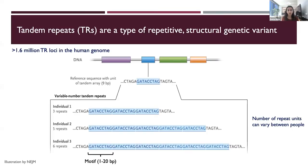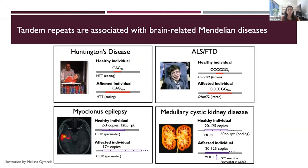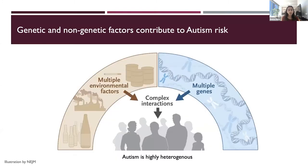Tandem repeats are DNA sequences that are repeated consecutively, and the number of times they repeat differs between people. They are interesting to study but have traditionally been difficult to analyze. We're interested in studying tandem repeats in the context of human diseases — they're known to cause a number of diseases with neurological phenotypes, such as Huntington's disease and ALS.